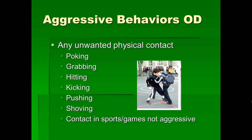Another operational definition is aggressive behaviors. In the experiment, we would say that any unwanted physical contact is an aggressive behavior. To make that less vague, we give the observer very specific things to look for: poking, grabbing, hitting, kicking, pushing, and shoving — all of these should be coded as an aggressive act. However, we should tell them that contact in sports or games is not aggressive, because when you play a game you give permission to be physically contacted. Now that I've described this, you could take it and observe behaviors in much the same way as this hypothetical experiment.